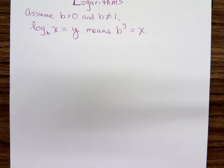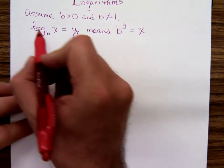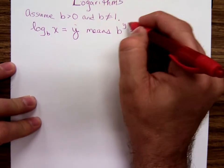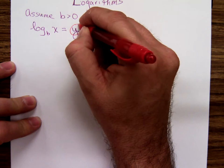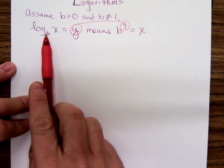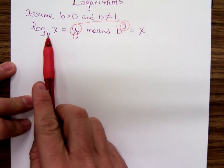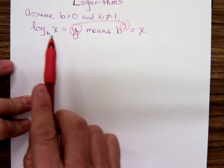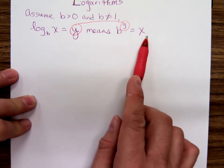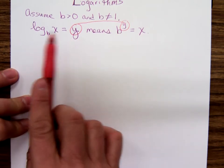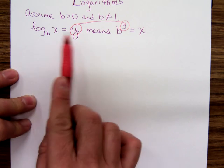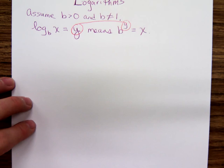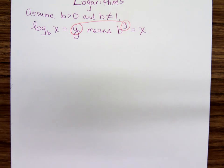Logarithms equal exponents. This logarithm is equal to this exponent. What's the exponent you put on this number b called the base in order to get this number x? There's two ways of stating every logarithmic expression: with the logarithm or as an exponent, which you're probably more used to.